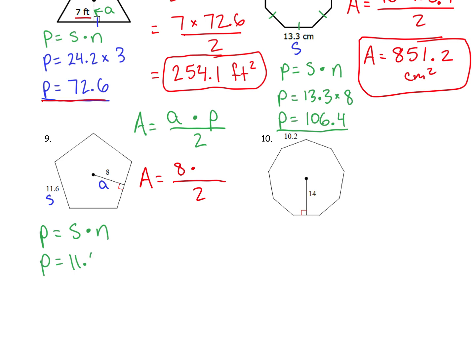We already have the side length 11.6. What does N stand for again? How many sides? How many sides are there in this shape? Five. Perfect. So I'm going to multiply 11.6 times 5. 11.6 times 5 gets me 58. All right. That means all I have to do is take this 58 and plug it in right here. Well this is going to come out nice and even. Let's see what we get. 8 times 58. Divide that by 2. That gives me 232 units squared.